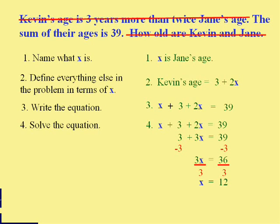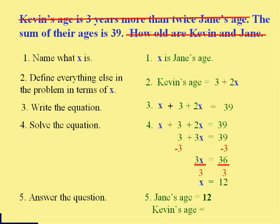Now, I'm still not done yet. I've got to answer the question. Now, what is 12? Whose age is 12? Good thing I wrote out steps one and two. I know that x is Jane's age, but they still want to know Kevin's age. Good thing I wrote that out. I can plug that 12 in and have 3 plus 2 times 12, and I can tell you Kevin's age. Kevin's age is 27. And I'm done.